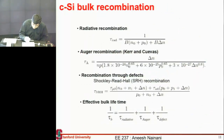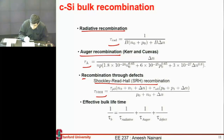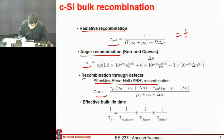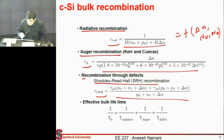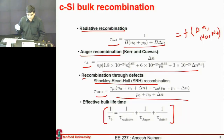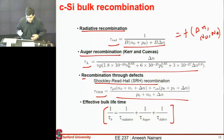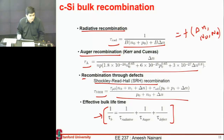For each process — radiative recombination, Auger, Shockley-Read-Hall — you have individual formulas giving the rate of recombination as a function of excess carriers and sometimes doping. You can assume each process happens independently, and so you can add the total rate, expressing the total lifetime by combining them in a harmonic mean fashion.